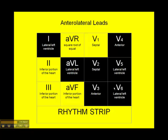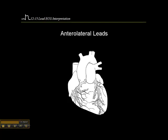These are the anterolateral wall leads. If a patient occludes their left main coronary artery before it bifurcates into the LAD and the circumflex, the patient would sustain a massive infarct. You would see ST elevation in V1 through V6 and in lead 1 and AVL. That's a very serious MI representing the entire anterior lateral wall surface, putting these patients at very high risk of sudden failure and hemodynamic instability.